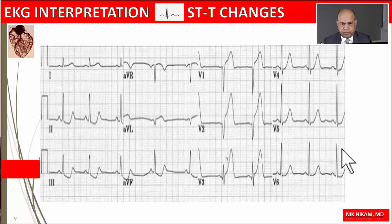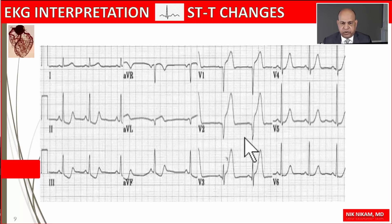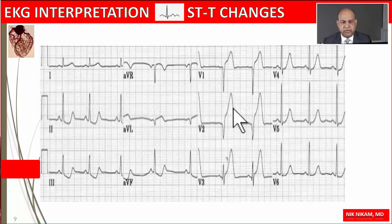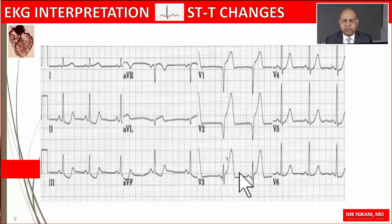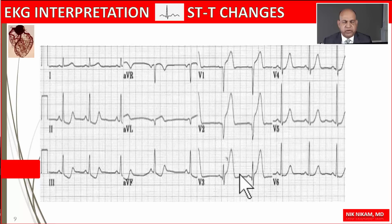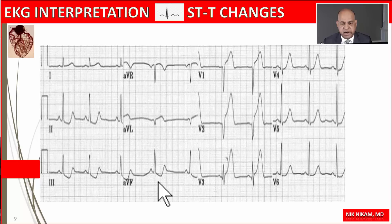Here we see hyperacute ST-T changes of an acute myocardial infarction. There is elevation of the J-point, straightening of the ST segment blending with the T waves, hyperacute T waves, along with development of pathological Q waves. This is an example of an acute anteroseptal myocardial infarction associated with ST elevation and hyperacute T waves.